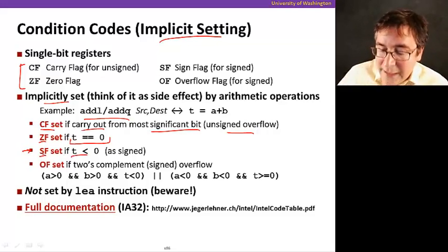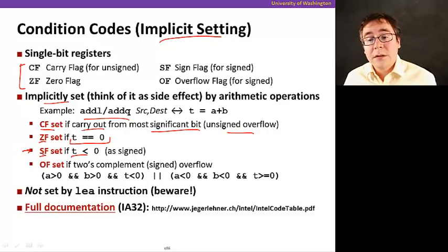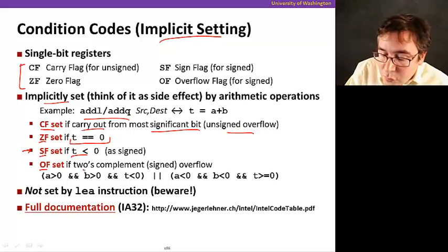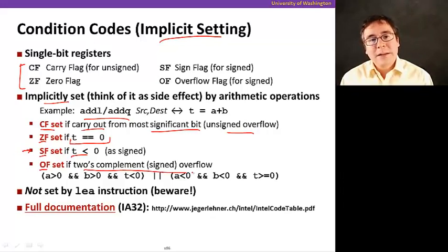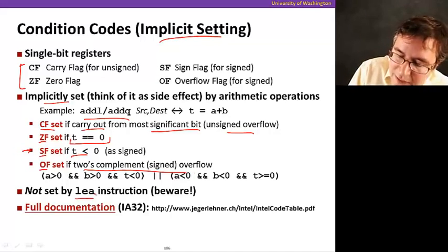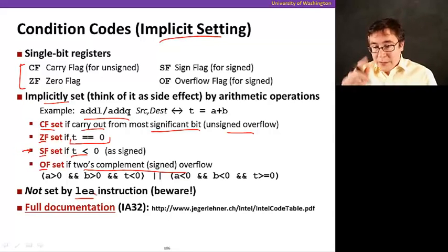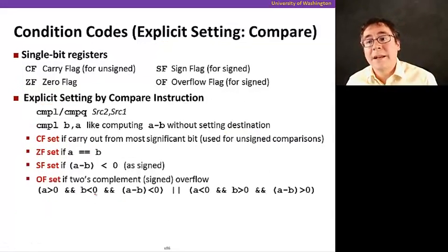If the result is negative, then SF is going to be set, meaning it's a negative number. And OF happens if there's a two's complement overflow. So if when you add, the number will be bigger than what fits in the register, you're going to have this bit set. Also, be careful: if you use the LEA instruction that also computes some arithmetic expressions, you do not set these condition codes. So be careful with that. That's the implicit setting.